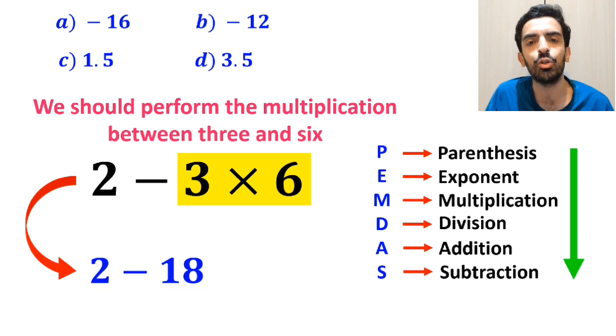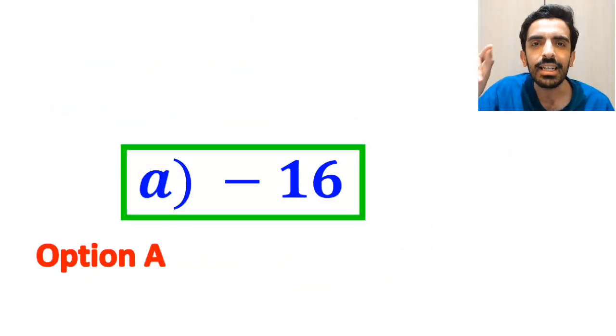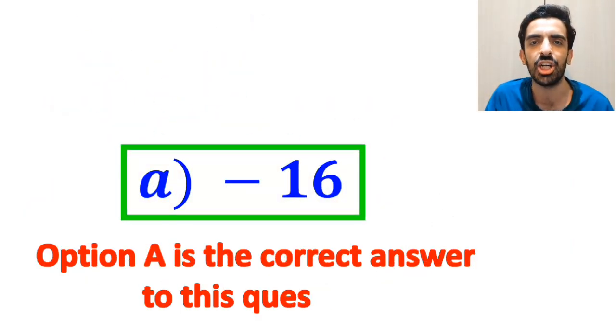So this expression simplifies to 2 minus 18, and finally we get the answer negative 16. Therefore option a is the correct answer to this question.